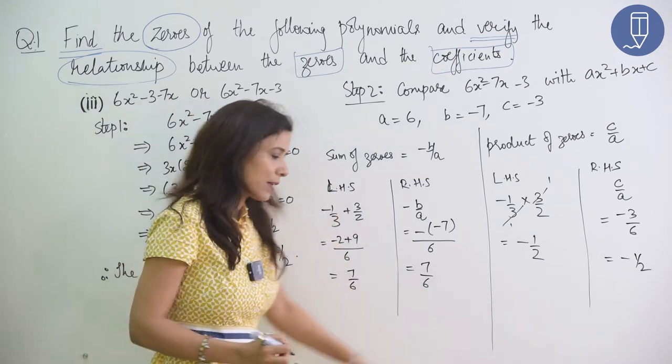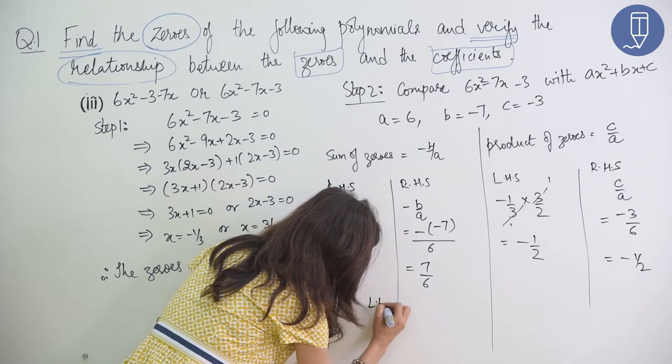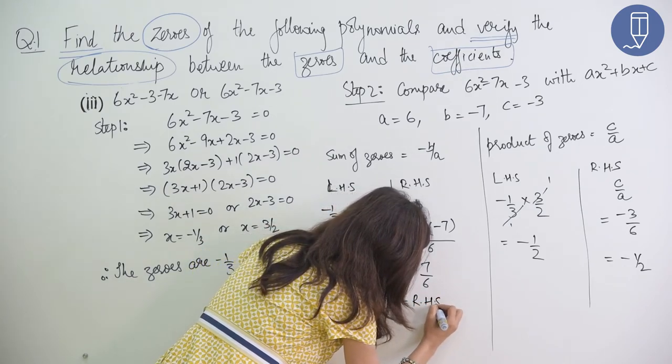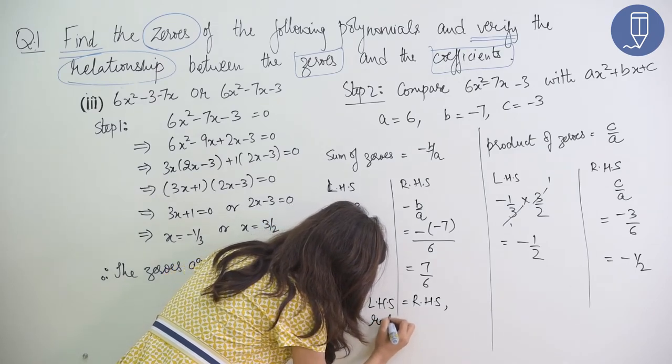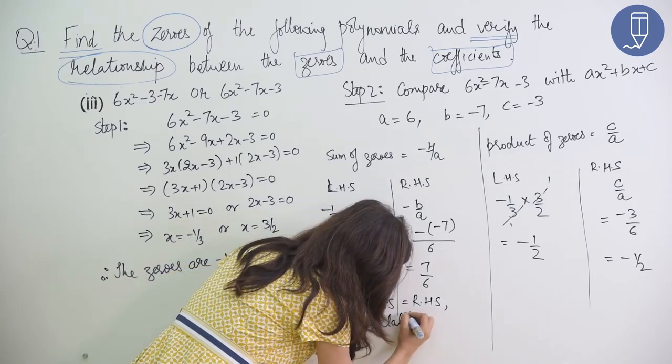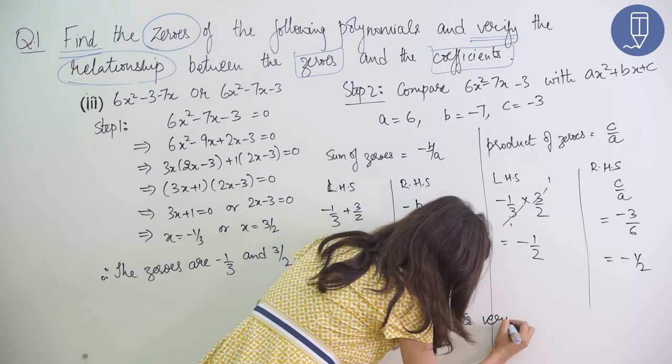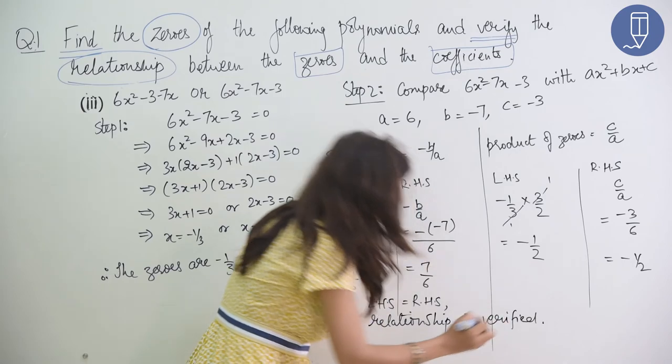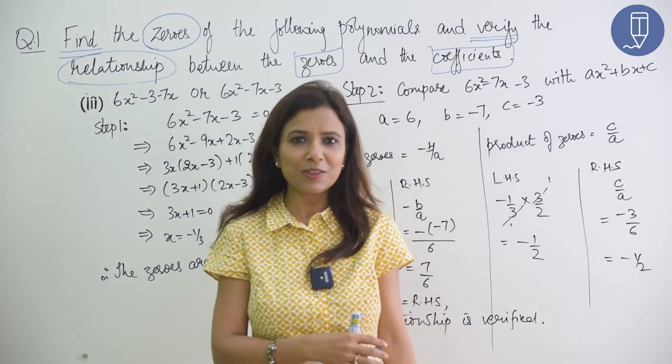Now we will put concluding statement. Since, this is important, write the last concluding statement. Equal to right hand side. Therefore, the relationship is verified. If any step you don't understand, then you can ask. Okay? Thank you.